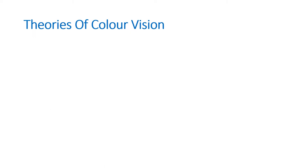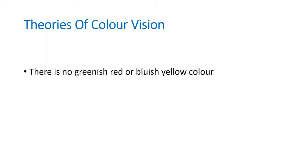The problem with trichromatic theory is that it could not explain why there is no greenish-red or bluish-yellow color, and it also could not explain the cause of after images. After images occur when, for example, you look at a red object for some time and then quickly look at a white background — you perceive the same object appearing in green. Trichromatic theory could not account for this.